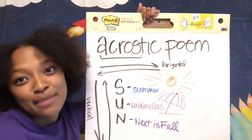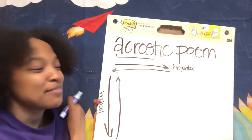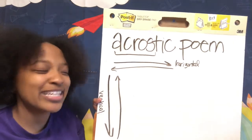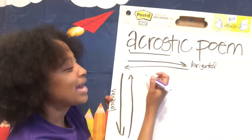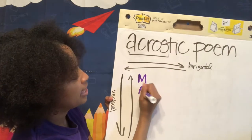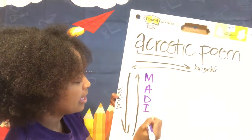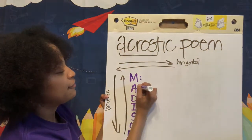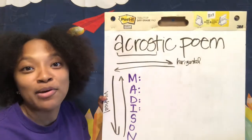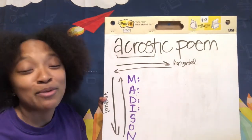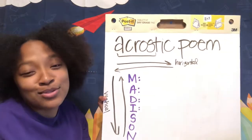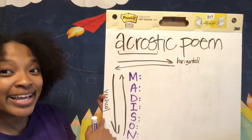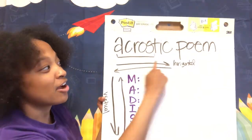Next we'll try something like a name. Doing an acrostic poem of your name gives people a really good idea about who you are as a person, what types of things you like, or what your character is like. So let's do my name. My name is Madison — M-A-D-I-S-O-N. My name is kind of long. If you're at home and you want to make an acrostic poem of your name, write it vertically — up and down, because that's the way our acrostic poem works.